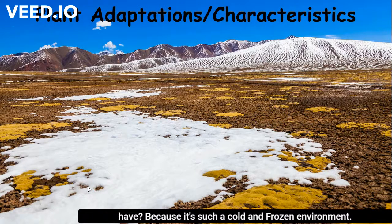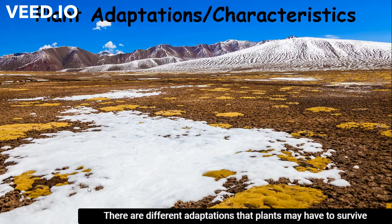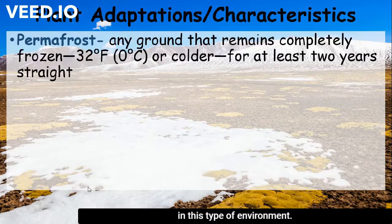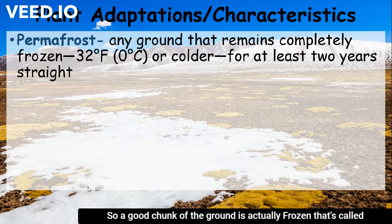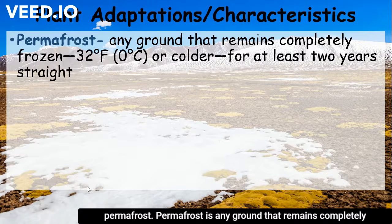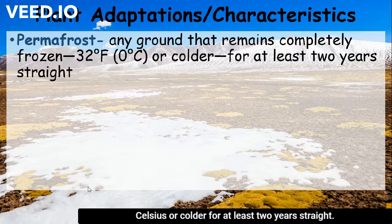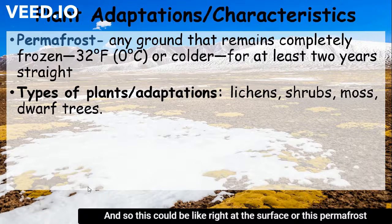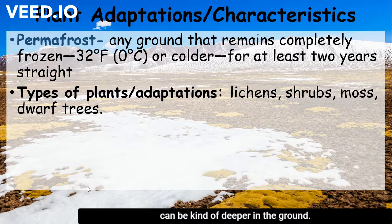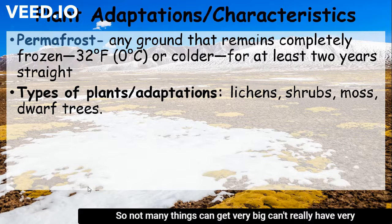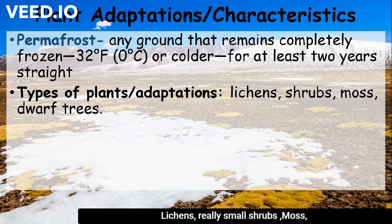Because it's such a cold and frozen environment, there are different adaptations that plants may have to survive in this type of environment. It is really cold, so a good chunk of the ground is actually frozen — that's called permafrost. Permafrost is any ground that remains completely frozen at about 32 degrees Fahrenheit or 0 degrees Celsius or colder for at least two years straight. This can be right at the surface or deeper in the ground, so not many things can get very big or have very deep roots in a frozen ground.